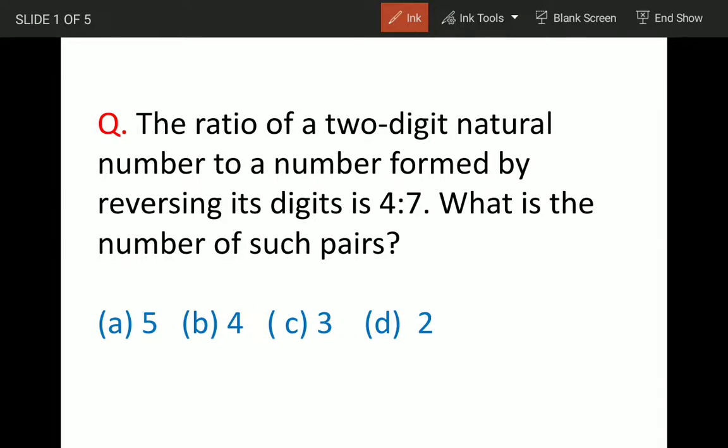The question is: the ratio of a two-digit number to a number found by reversing its digits is 4 to 7. What is the number of such pairs? These are the answer options. Let's say the two-digit numbers are x and y. When we reverse the digits, we make the number yx.